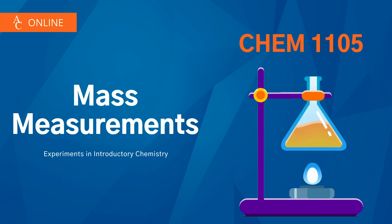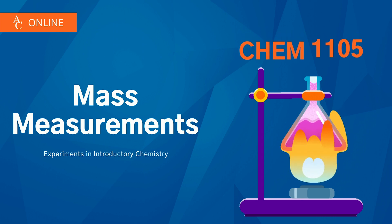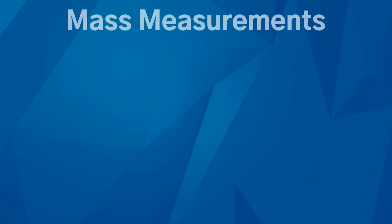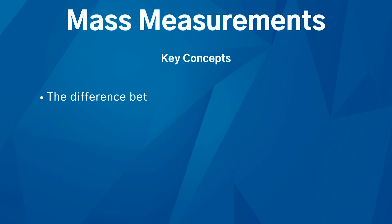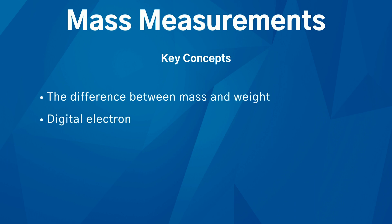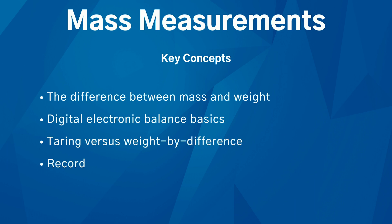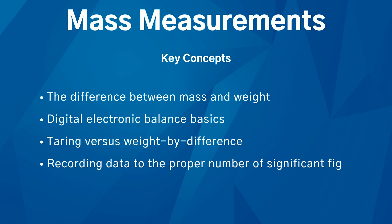Welcome to the mass measurements experiment for chemistry 1105 lab. This experiment corresponds to lab C, experiment number two in the textbook. In the first part of the textbook — the background — you'll want to be sure and note five key concepts.